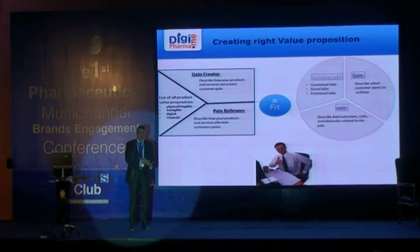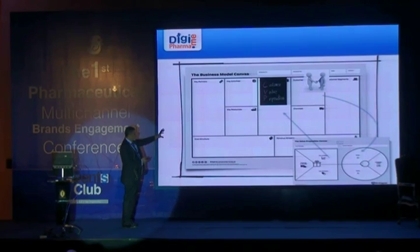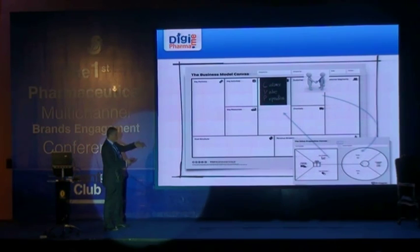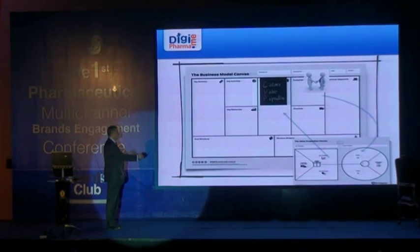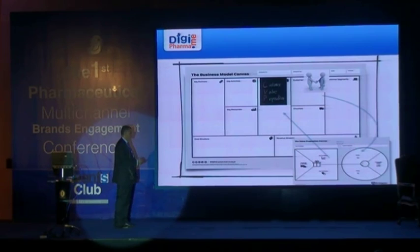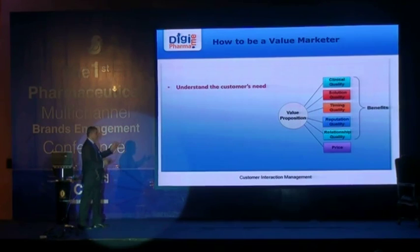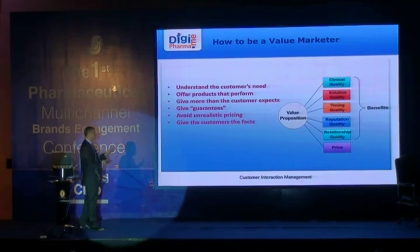This is the Business Model Canvas. It contains two parts: the value proposition and the CRM system. The CRM system holds data about the doctor's pain and job description, and the customer value proposition maps to this CRM data, giving you a comprehensive business model canvas. To build the right value proposition: understand customer needs, offer products that perform better than expected, give guarantees, avoid unrealistic pricing, give customers only the facts, build the relationship, and empathize with the customer.